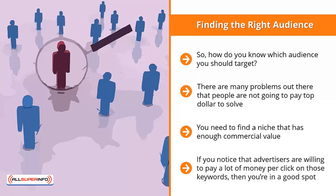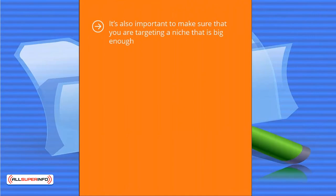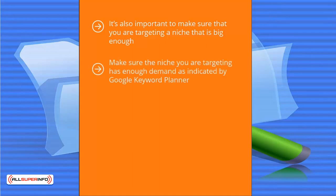People are willing to pay a significant amount of money to solve problems related to your niche. It is also important to make sure you are targeting a niche that is big enough. For example, advertisers may pay more than $20 per click for structured settlement keyword traffic, but the volume of searches for that niche is actually quite low. Make sure the niche you are targeting has enough demand as indicated by Google Keyword Planner, which tells you both cost-per-click and estimated search volume.